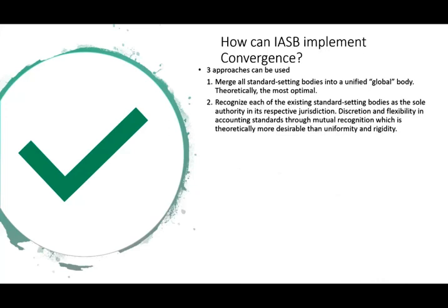The second approach is to recognize each of the existing standard-setting bodies as the sole authority in its representative jurisdiction and give them discretion and flexibility in accounting standards through mutual recognition, which is theoretically more desirable than uniformity and rigidity. Basically what I do is accepted by you and what you do is accepted by me. The third way is that national standard-setting bodies can coexist with international coordination bodies — and this is basically what we have right now. Number three is the closest to what we actually have.